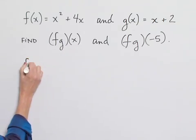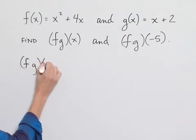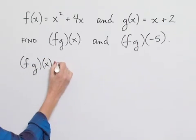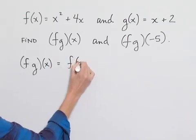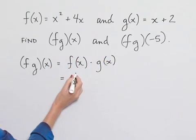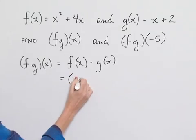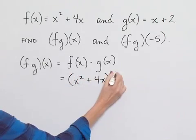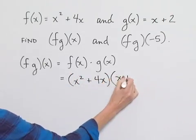When we write down fg of x, that's indicating we're going to be multiplying the two functions together. That is, we're going to have f of x multiplied times g of x. So let's write down our expression for f of x, which is x squared plus 4x. We want to multiply that times our expression for g of x, which is x plus 2.